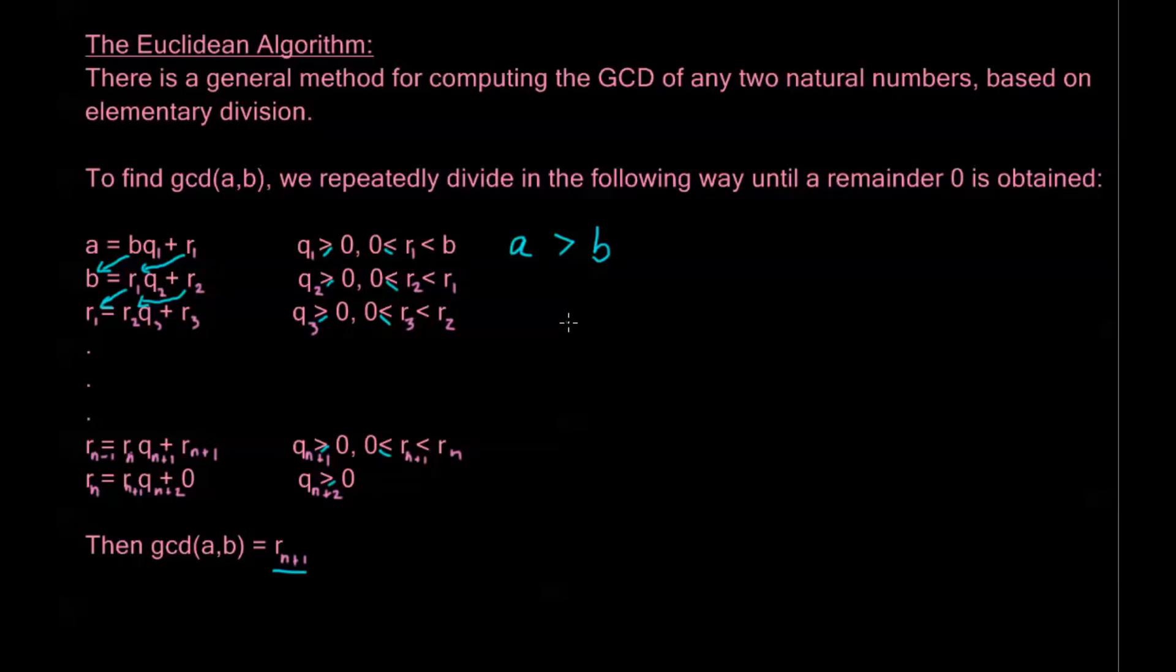Well, first of all, if my GCD is D, I know that D divides A, and D divides B. Now, if D divides A and D divides B, that implies that D divides the difference. D is going to divide A minus BQ1, which of course is just equal to R1.